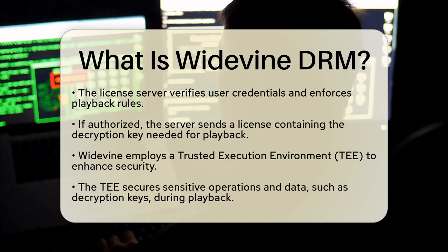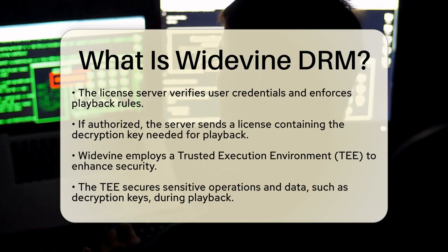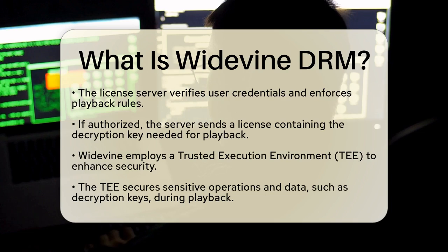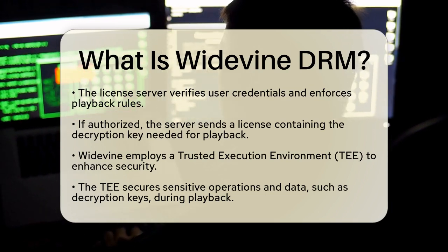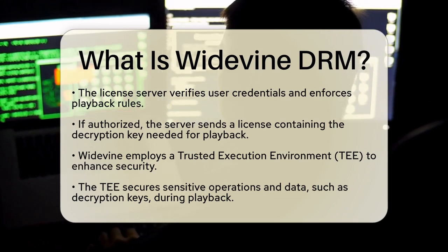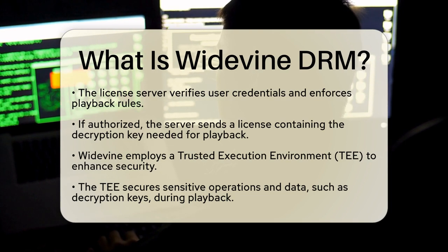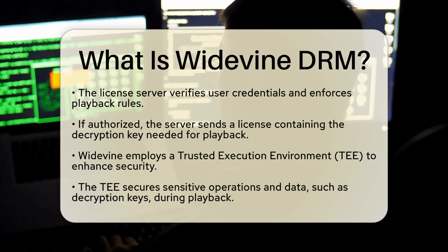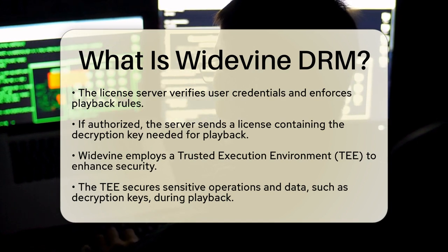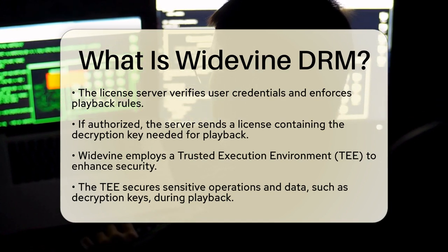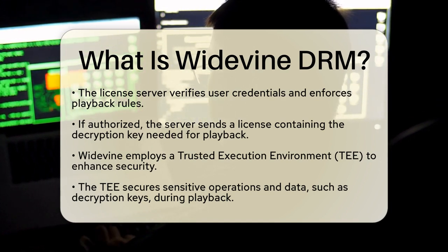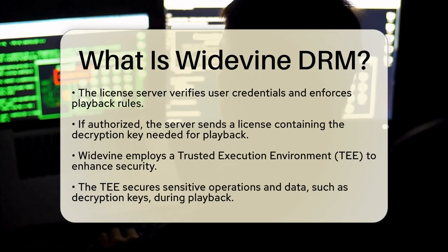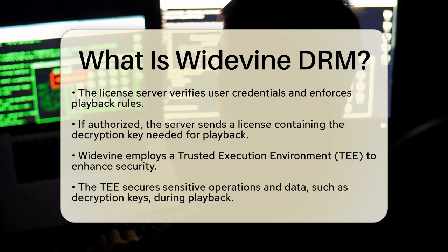such as device restrictions or limits on how long the content can be viewed. If the user is authorized, the server sends a license containing the key needed to decrypt and play the content. From a security standpoint, Widevine uses a feature called the Trusted Execution Environment — a secure area within the device's processor that protects sensitive operations and data, like decryption keys. By using this environment, Widevine helps prevent piracy and unauthorized copying, ensuring that decrypted content and keys remain secure during playback.